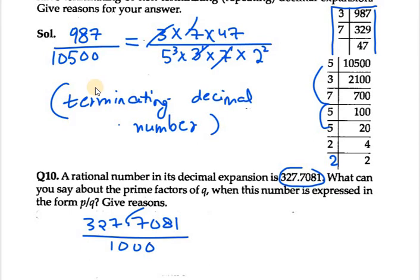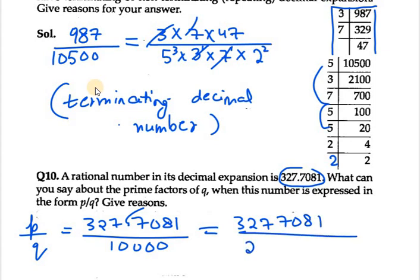When we remove the decimal from here we need to put 4 zeros at denominator, so it will be 327081 over 10000. Now it is in the form of p over q. We need to tell them what will be the q factors. So 10000 can be written in terms of prime factors as 2 raised to power 4 and 5 raised to power 4. So q has two factors: 2 raised to power 4 and 5 raised to power 4. That's your answer for question number 10. Thank you for watching.